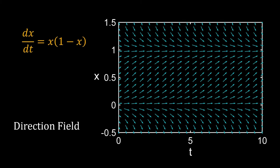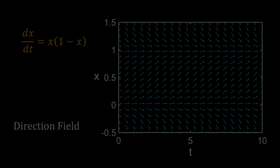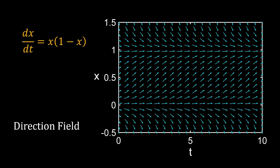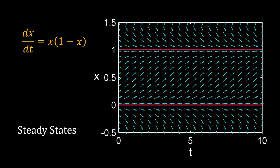In the last video we discussed the direction field, which is made of arrows with slope equal to the derivative of the dependent variable. These arrows show the path of the time evolution of the dependent variable. We also learned about the steady state — at a steady state the derivative of the dependent variable is zero. Take the example of this ODE, which has two steady states: x equal to zero and x equal to one.